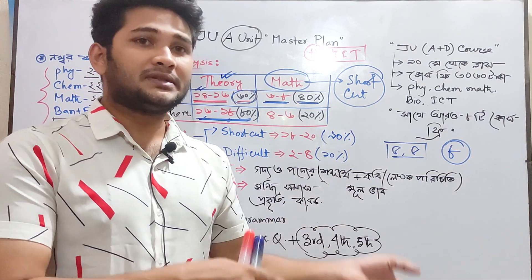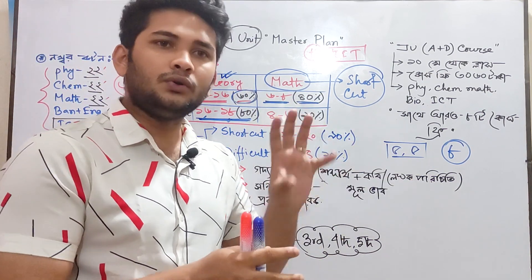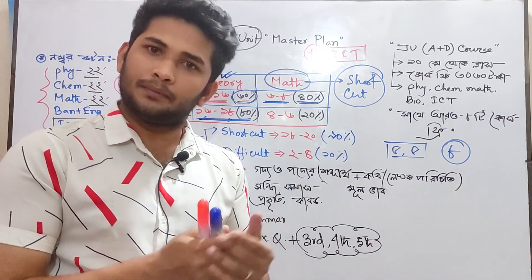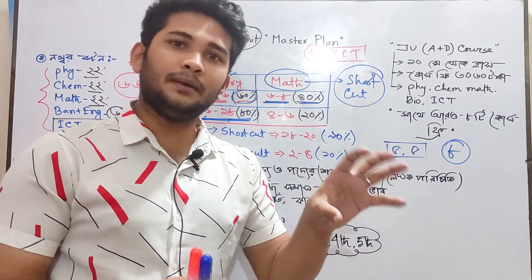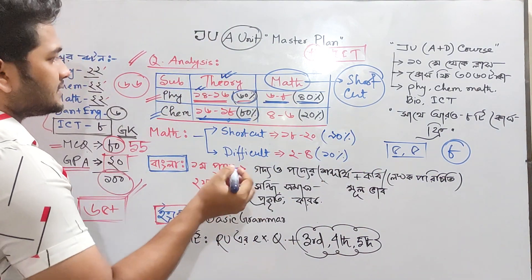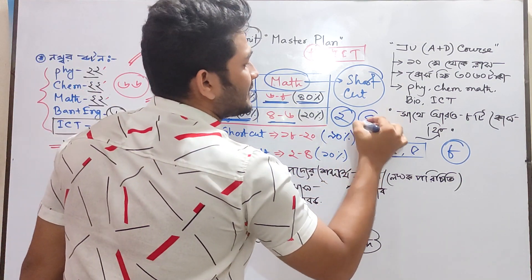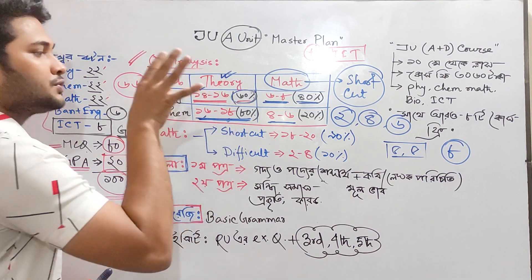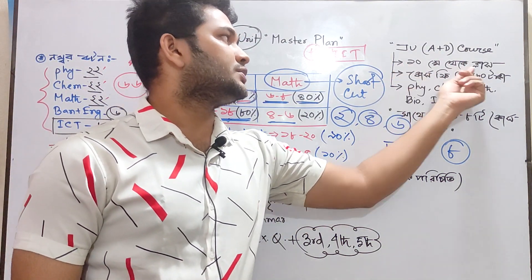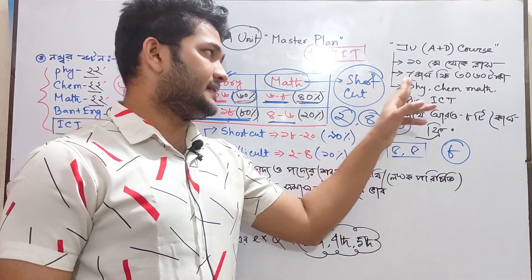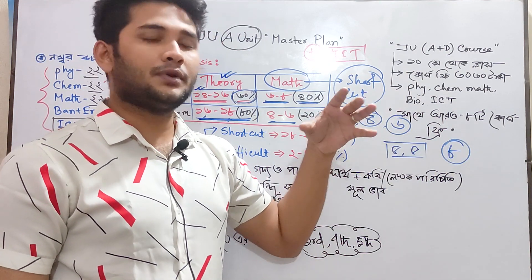If you want to know about the statistics, you have to look at the statistics. There are a lot of studies. First of all, you have to look at the statistics. This is the 4th person which is mathematical, the 2nd person, the 3rd person. This is chemistry — the 3rd person, the 5th person, and the 8th person.